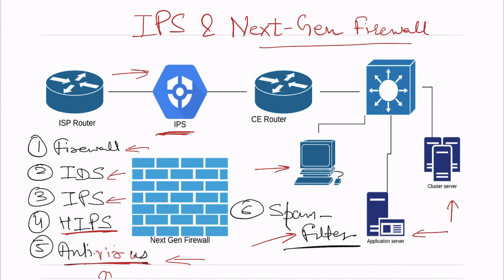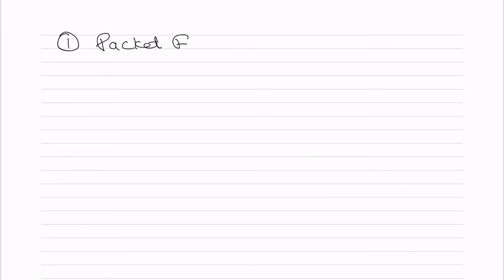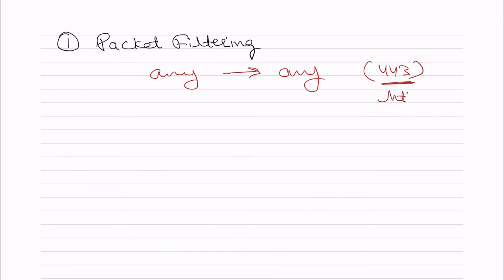Now I'll talk about the next gen firewall. The IPS functionality is part of next generation firewalls. But first let me tell you what a firewall does — the basic role of a firewall is packet filtering. It uses source IP, destination IP, source port, or destination port. An administrator can choose to block certain traffic, for example blocking users from accessing the internet over port 443, which is used for HTTPS.